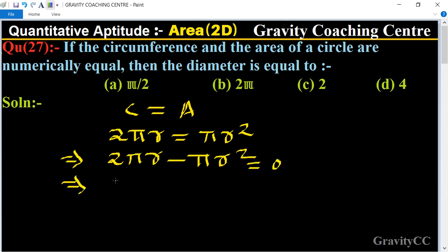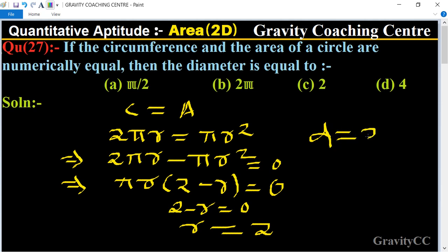This implies that πr will be the common factor, so πr(2 minus r) equals 0. Therefore 2 minus r equals 0, so r equals 2. To find the diameter, diameter equals 2r.